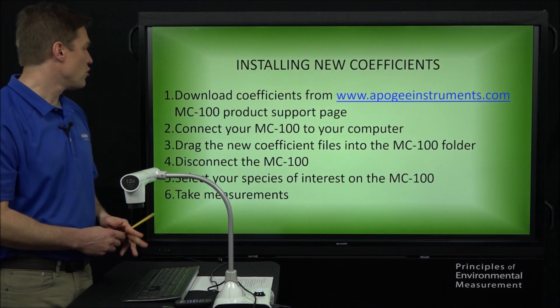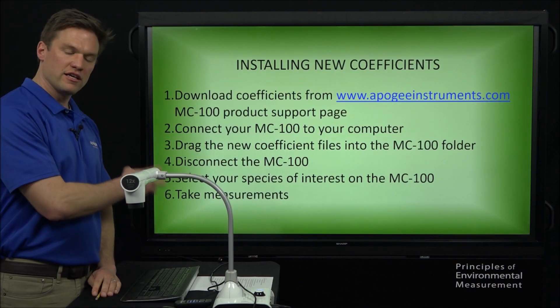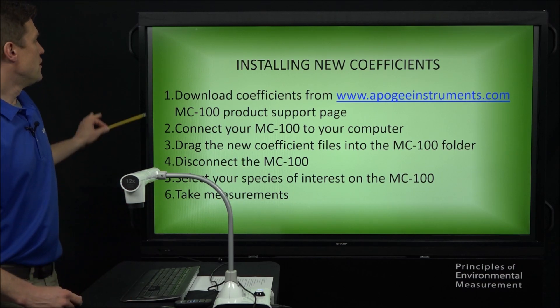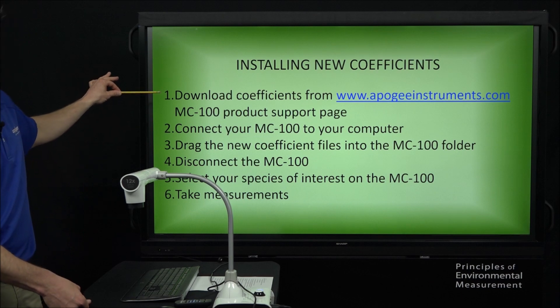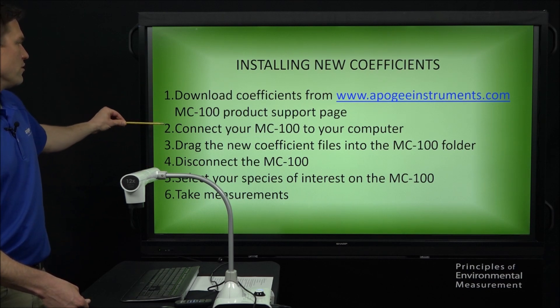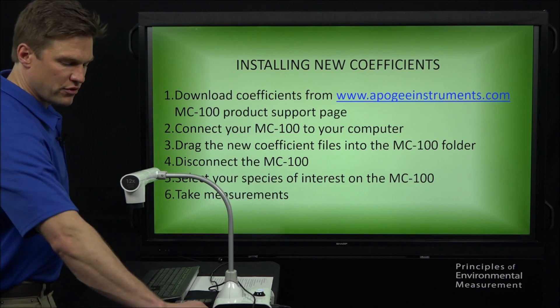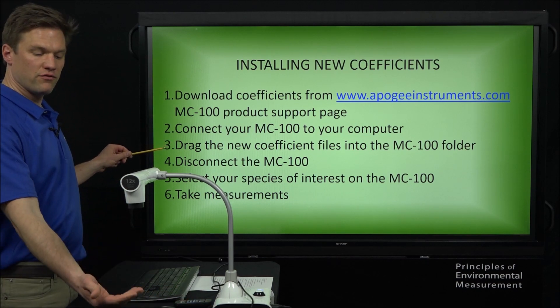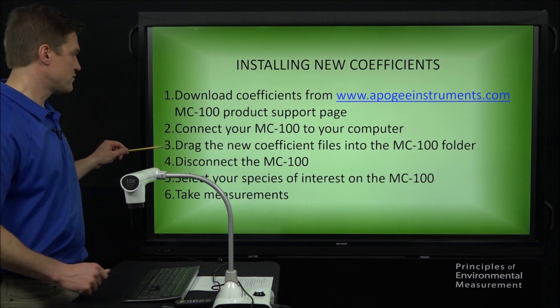So now we're at the part where I'll go over very quickly how to get those coefficients, load them onto your meter, select them, and take measurements. We will download the coefficients from our website. We will connect this to our computer using a little USB cord it came with. We'll drag the new files onto the folder that shows up from this MC-100.